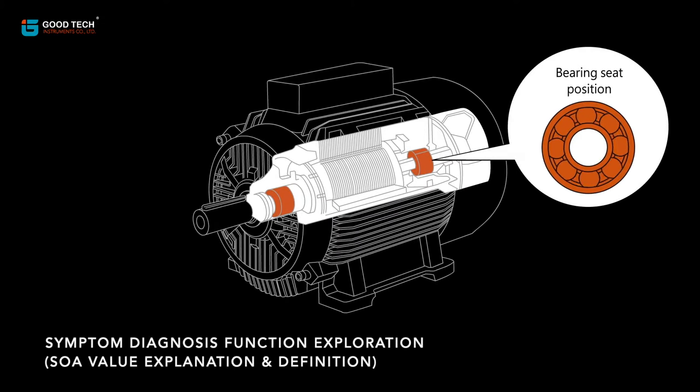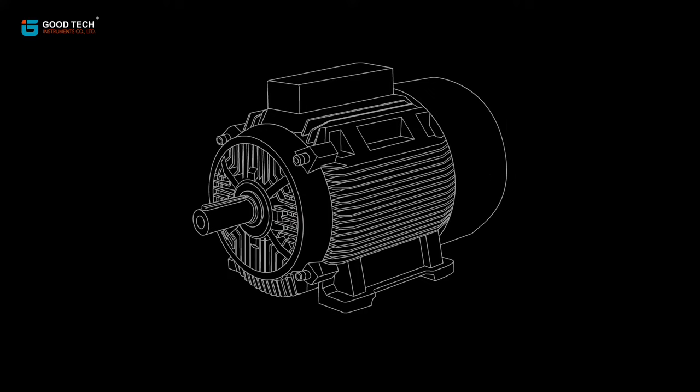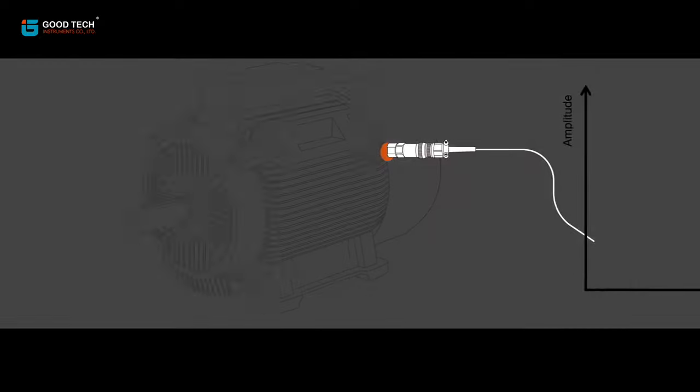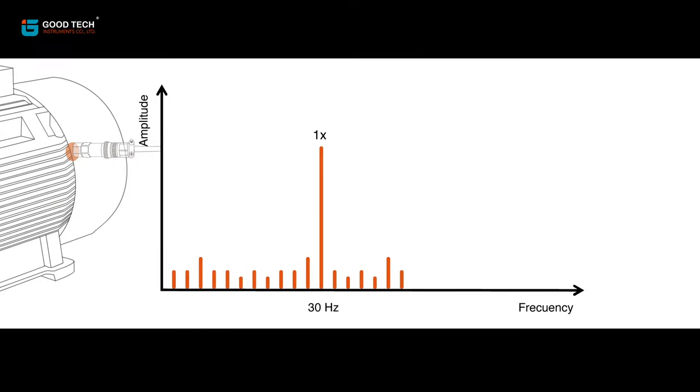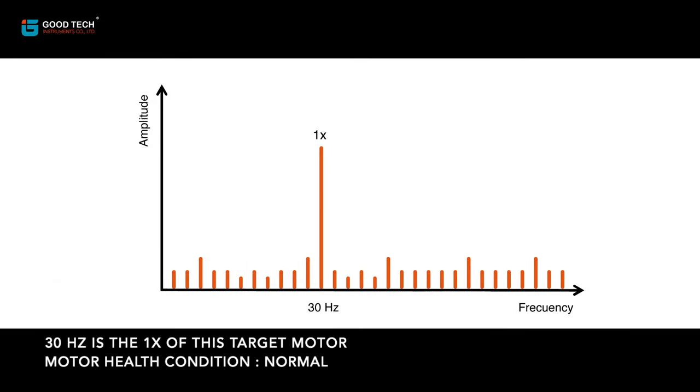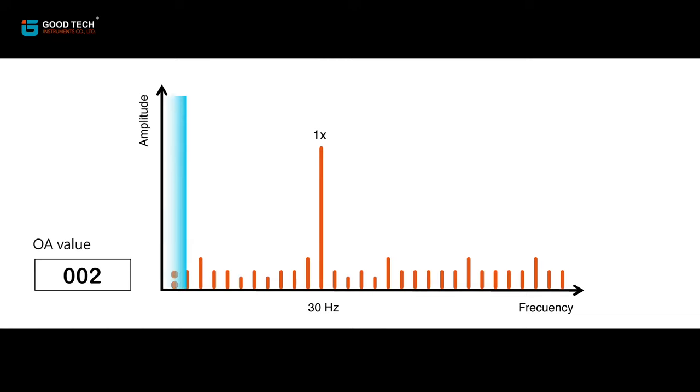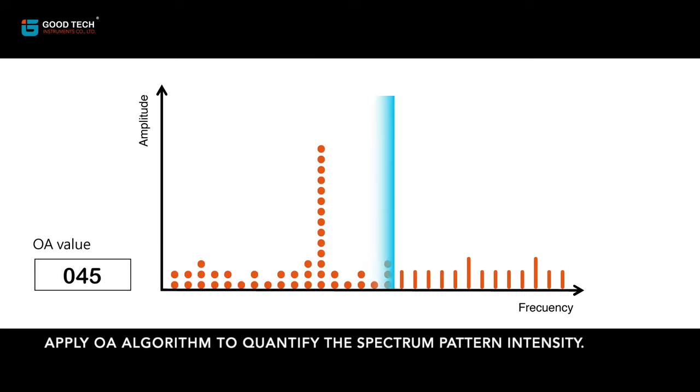Symptom diagnosis function exploration: OA value explanation and definition. 30 Hz is the 1x of this target motor and motor health condition is normal. Apply OA algorithm to quantify the spectrum pattern intensity.